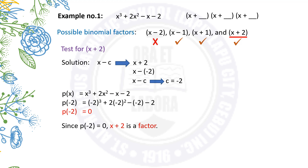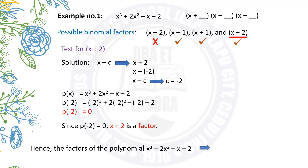Since we have three confirmed factors for the polynomial, we conclude that the factors of x cubed plus 2x squared minus x minus 2 are x minus 1, x plus 1, and x plus 2.